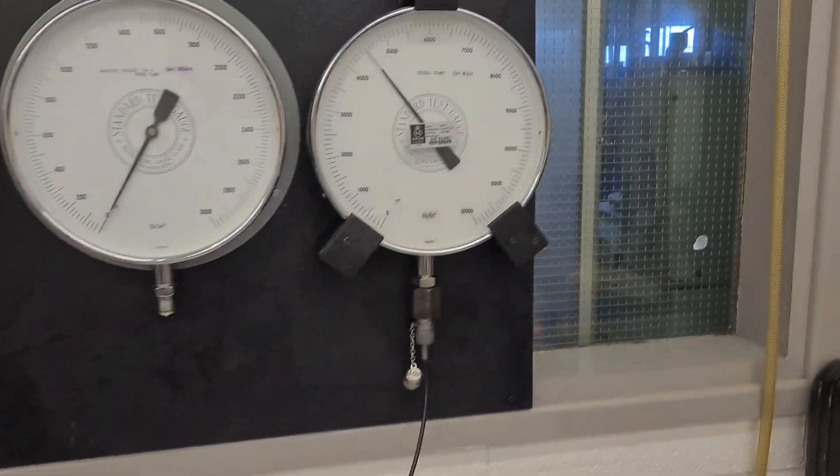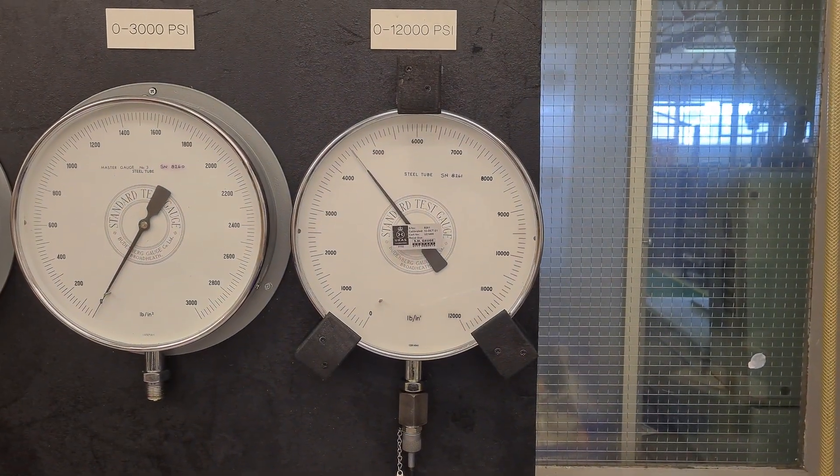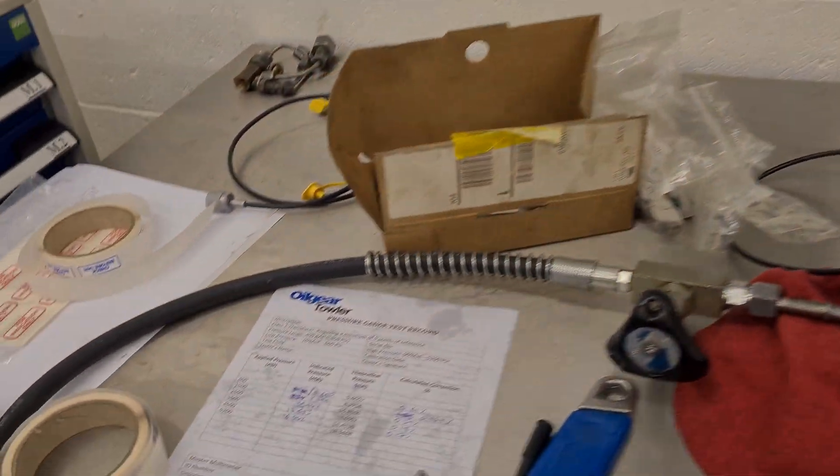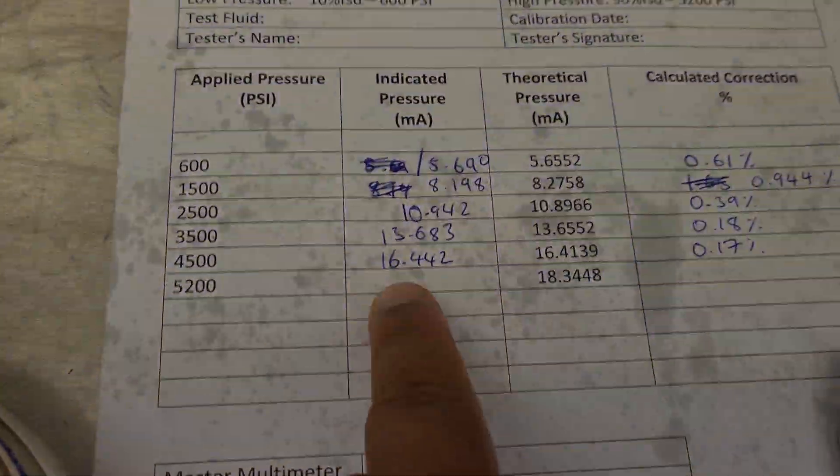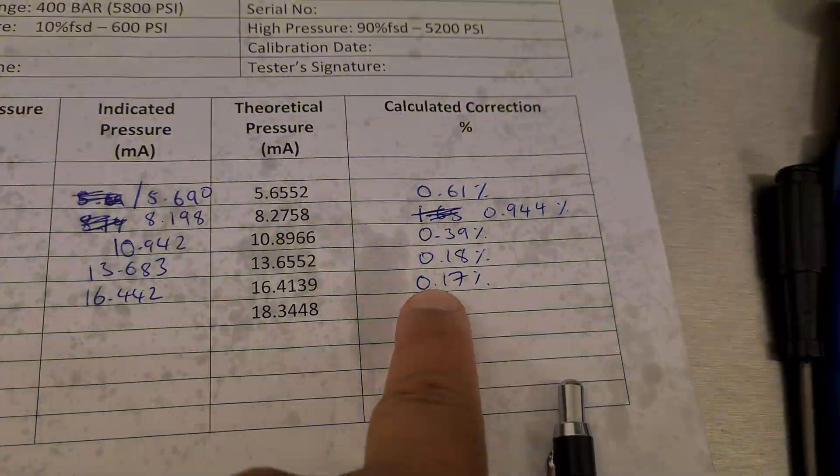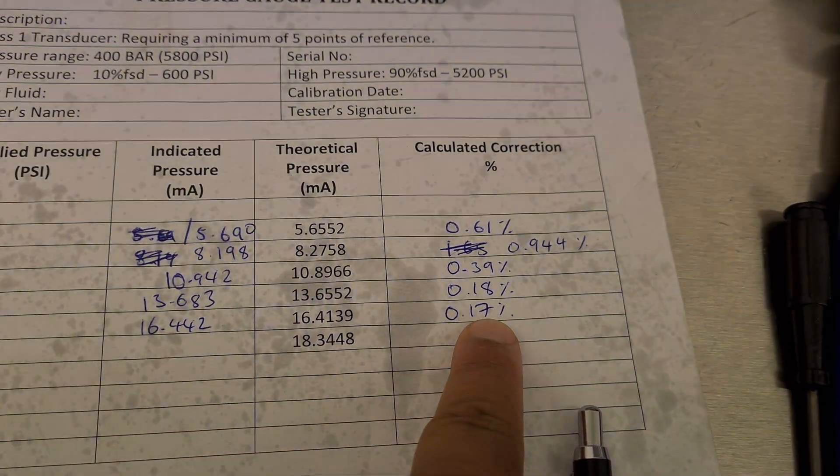And so once I get down to 4,500, which not exactly there yet. Now I take a reading. So I took a reading earlier of 16.442 milliamps and so that was 0.17 percent out.